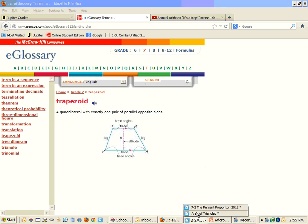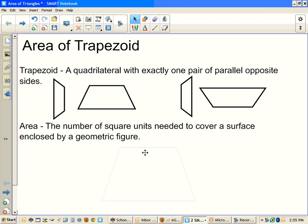Alright, so back to your area. The area is just all the square units needed to cover the surface of an enclosed geometric figure. It's the creamy nougat on the inside that counts kind of thing. That's the area.